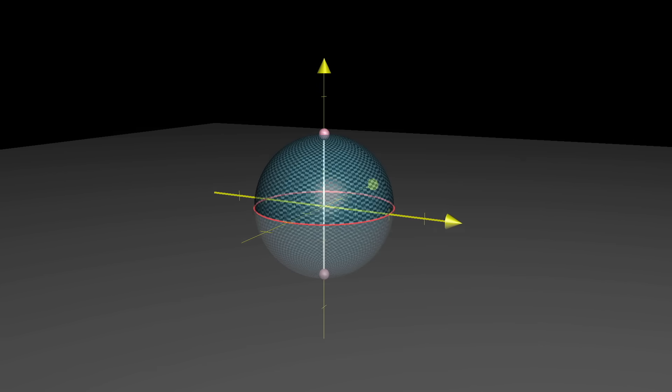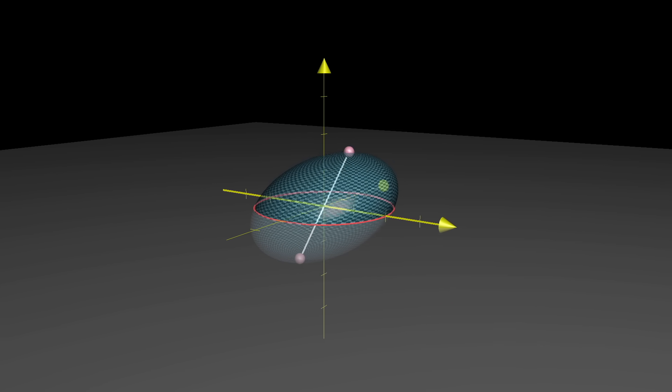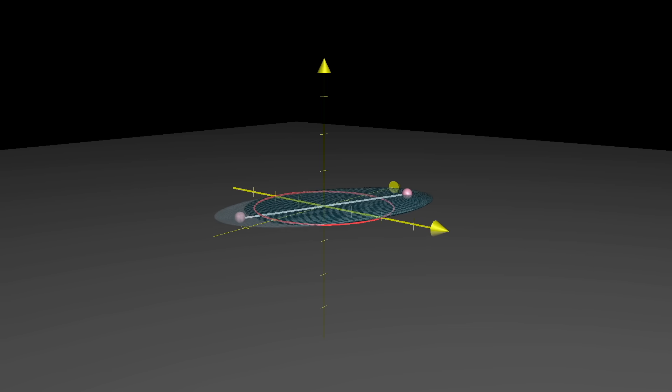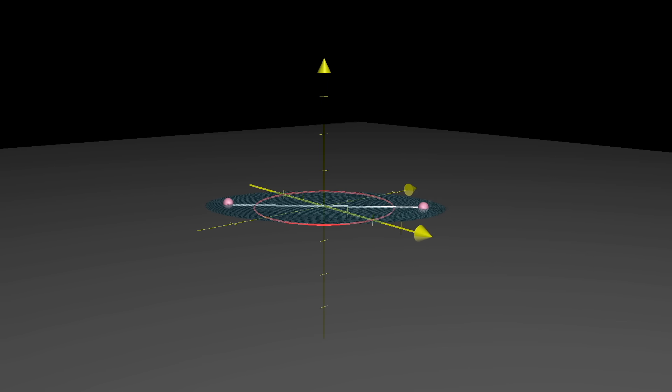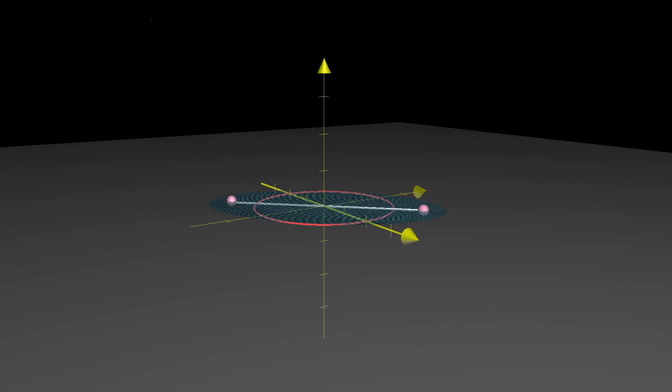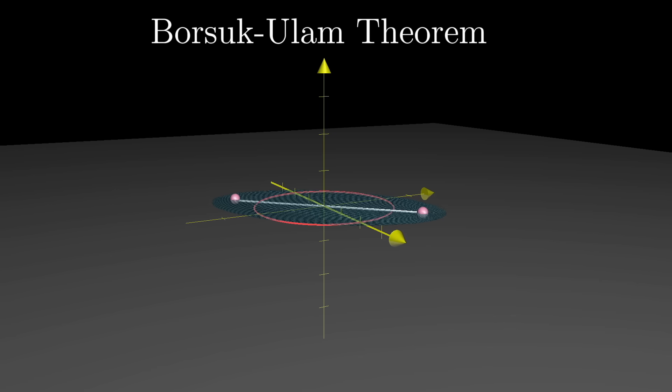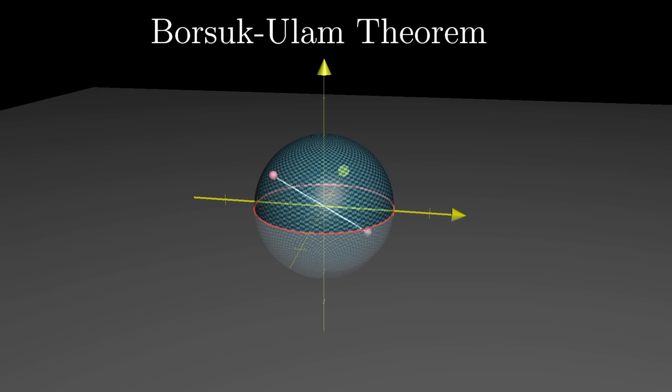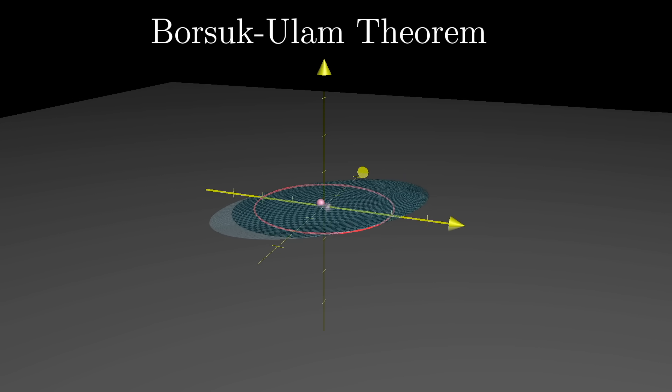If you tweaked this function a bit, maybe shearing it during the projection, the North and the South Pole don't land on each other anymore. But when the topology gods close a door, they open a window, because the Borsuk-Ulam theorem guarantees that no matter what, there must be some other antipodal pair that now land on top of each other.